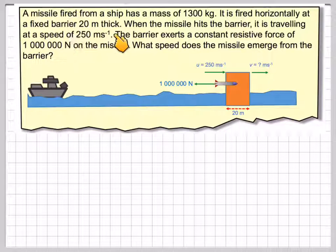A missile fired from a ship has a mass of 1,300 kilograms. It is fired horizontally at a fixed barrier 20 meters thick. When the missile hits the barrier, it is travelling at a speed of 250 meters per second. The barrier exerts a constant resistant force of 1 million newtons on the missile.